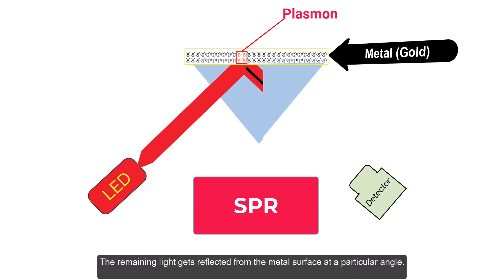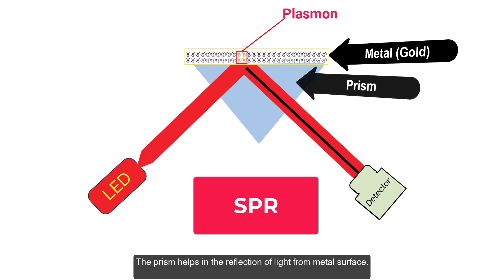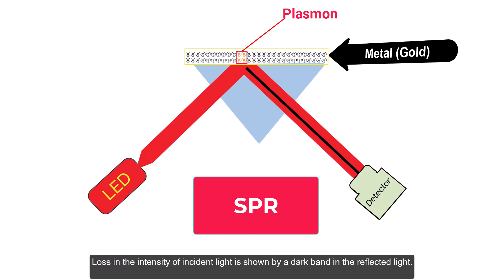The remaining light gets reflected from the metal surface at a particular angle. The prism helps in the reflection of light from the metal surface. The loss in the intensity of incident light is shown by a dark band in the reflected light.